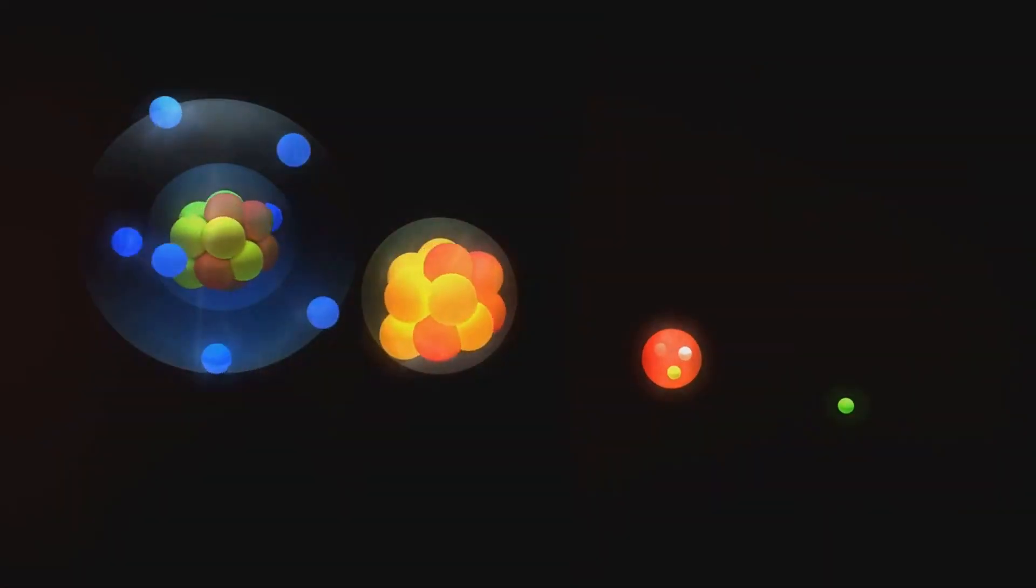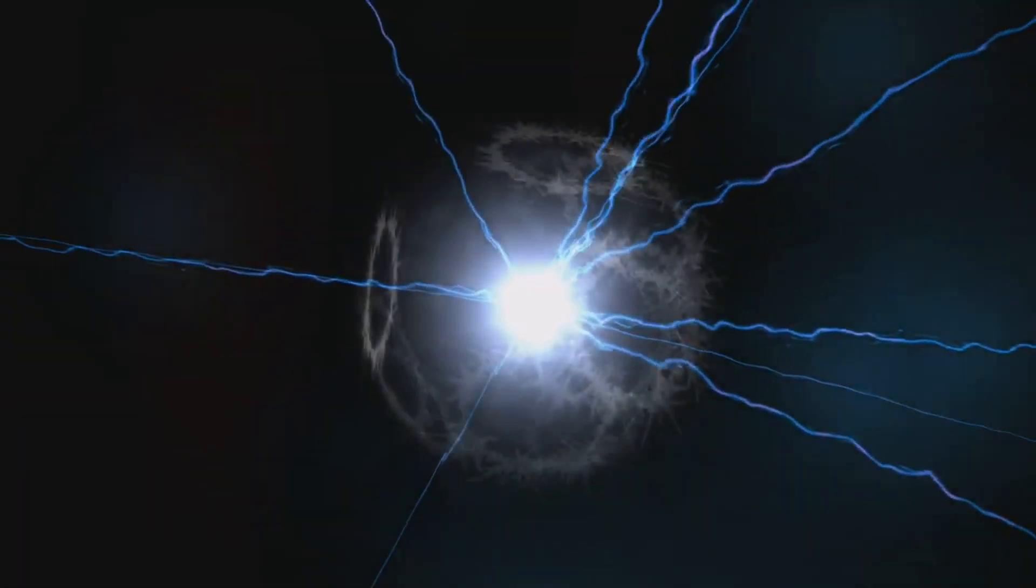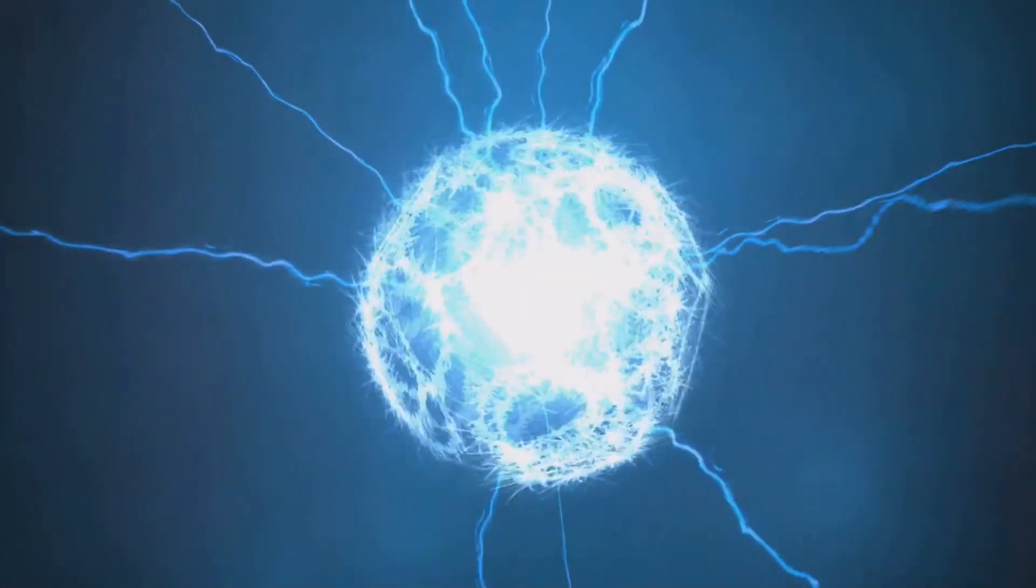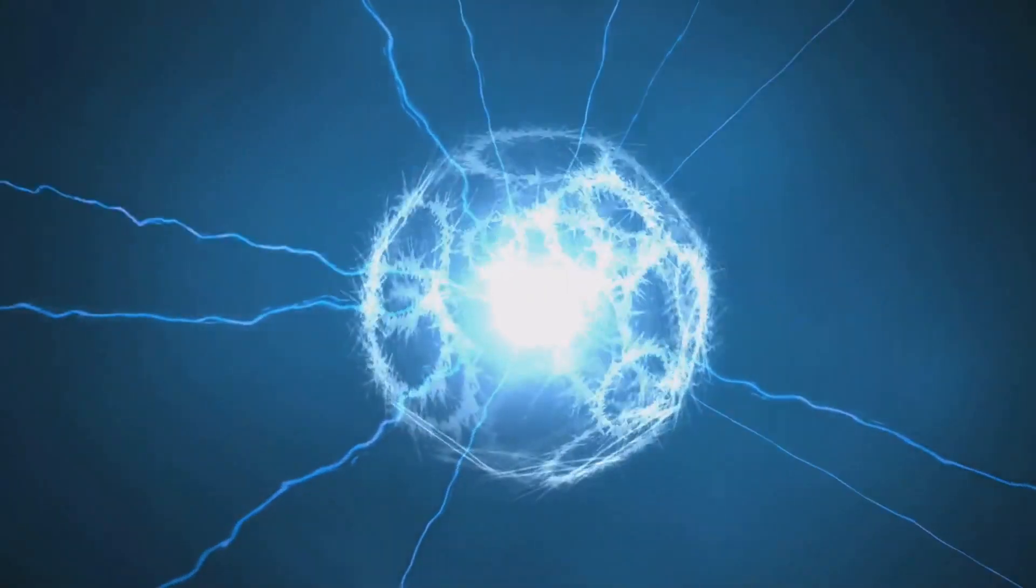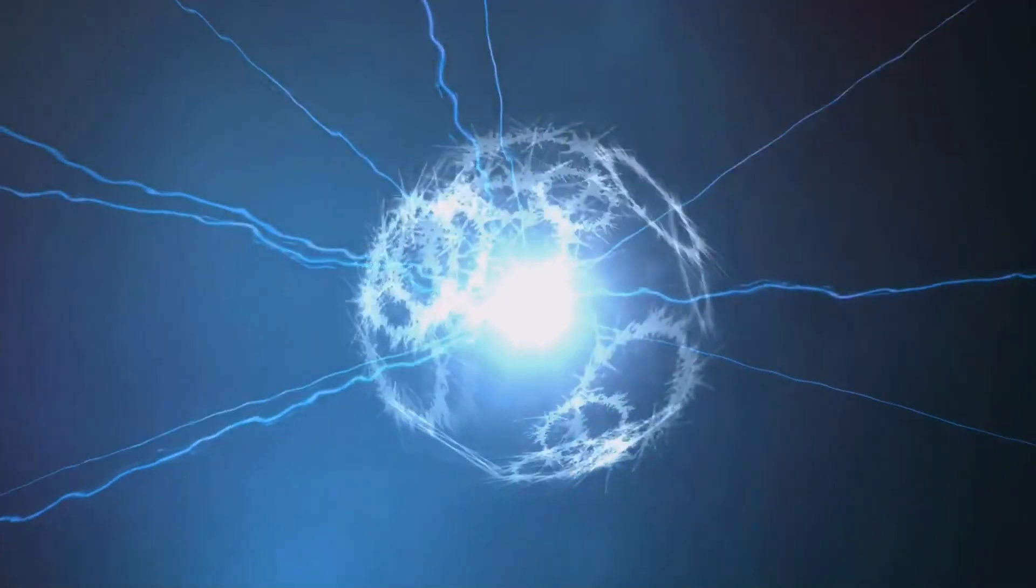Picture this. Every object around you is made up of tiny particles called atoms. And these atoms contain charged particles. When these charges are stationary, we call it electricity. But when they move, they create magnetic fields.